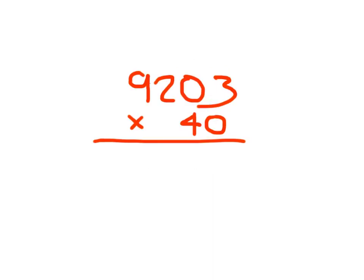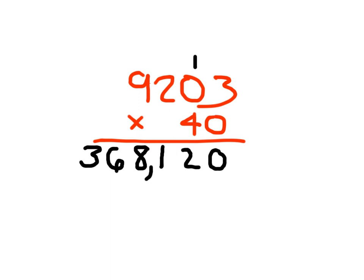Here we have 9,203 times 40. We place the 0 because that 4 is worth 40. Then 4 times 3 which is 12 — place the 2, and make sure that regroup goes right to the next place value. 4 times 0 which is 0, plus 1 which is 1. 4 times 2 which is 8. And 4 times 9 which is 36. Then place our comma, and 9,203 times 40 equals 368,120.